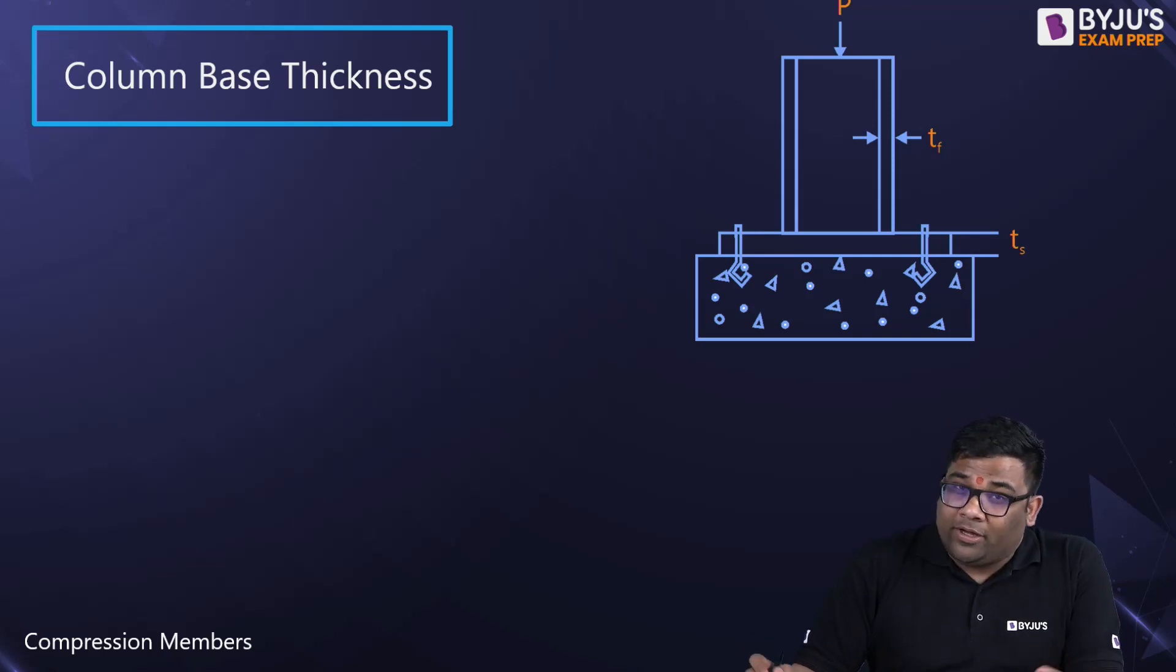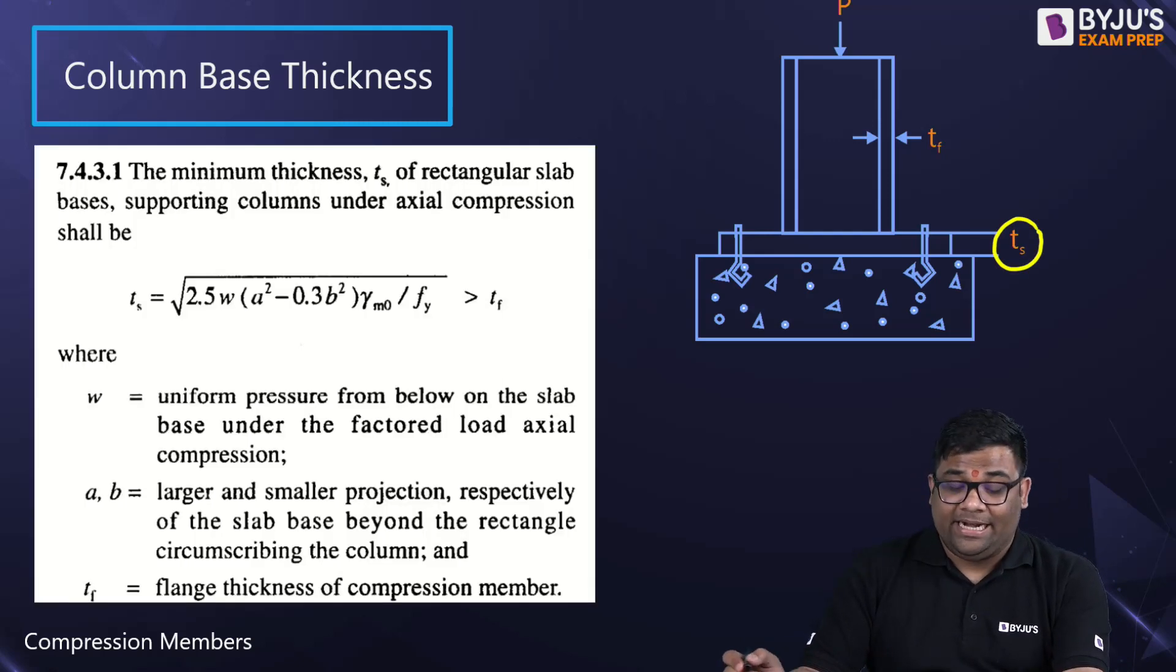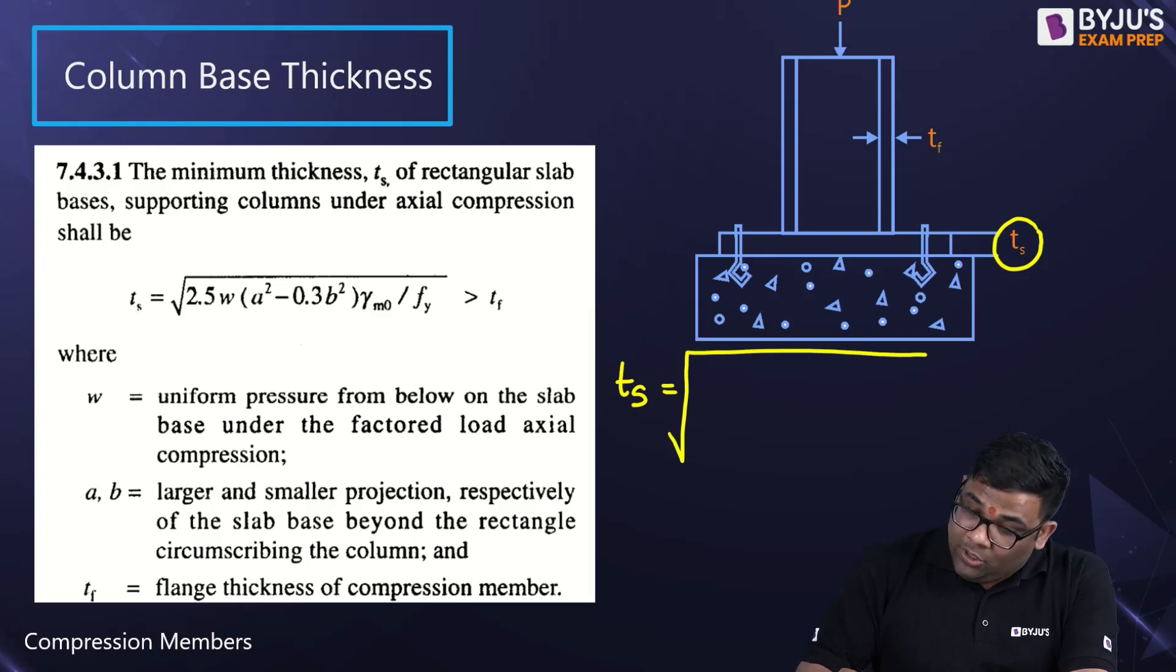So now how to find out this formula? Let us go to the code IS800 and the formula given is ts equals root under 2.5 w (a square minus 0.3 b square) divided by fy by gamma m0.